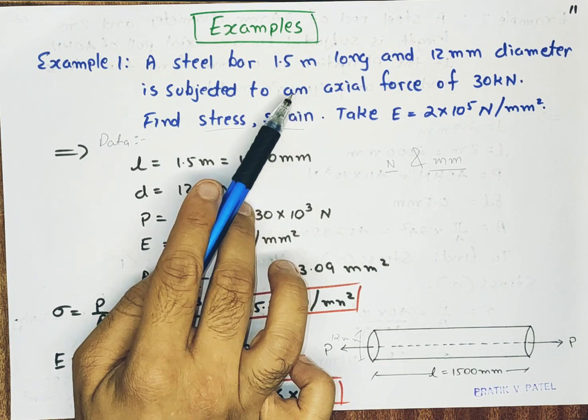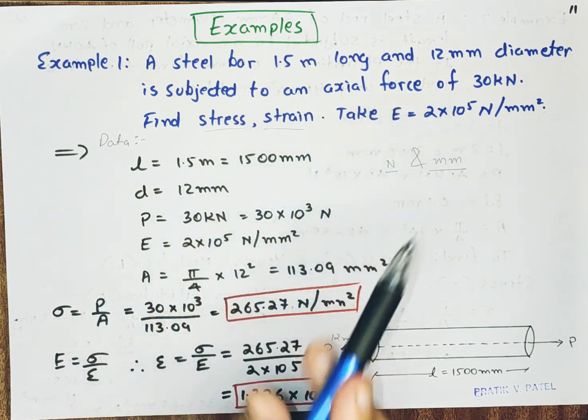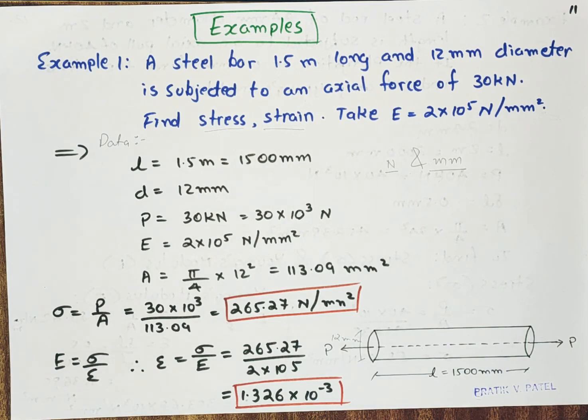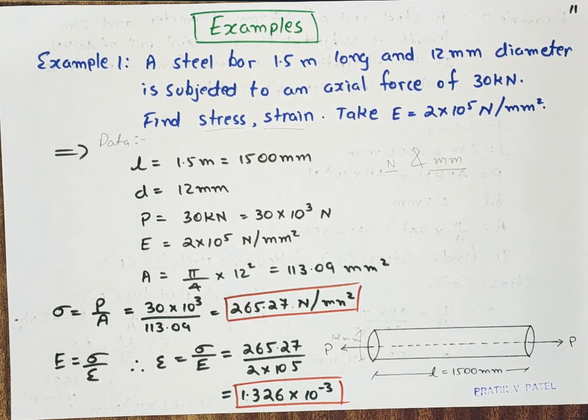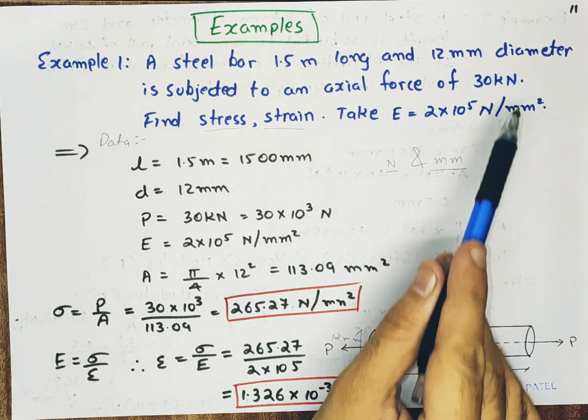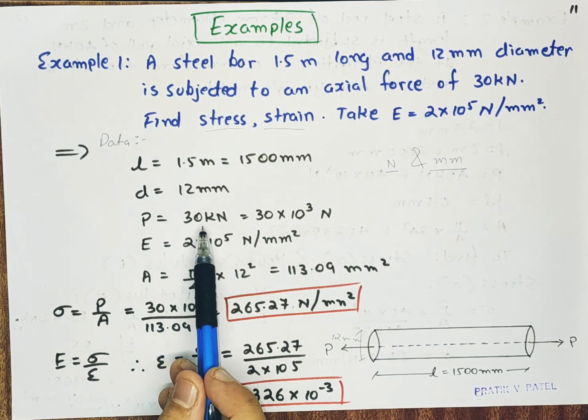It is subjected to an axial force of 30 kilo newton. Axial force of 30 kilo newton. That is P. So P is equal to 30 kilo newton.